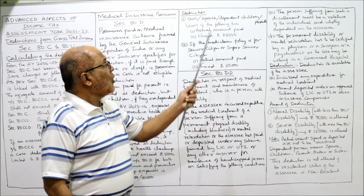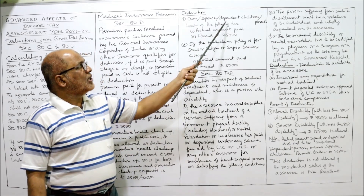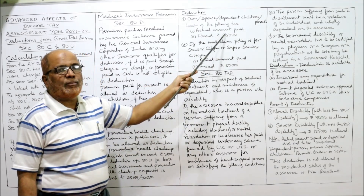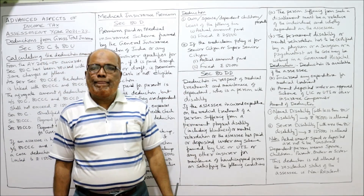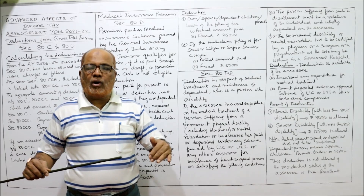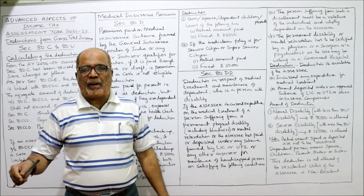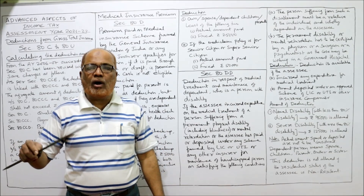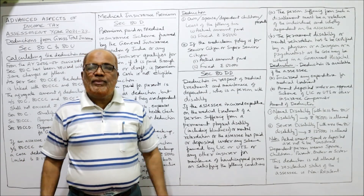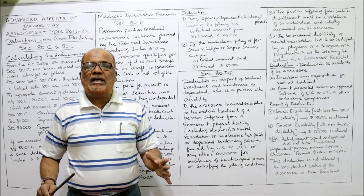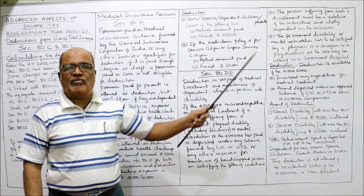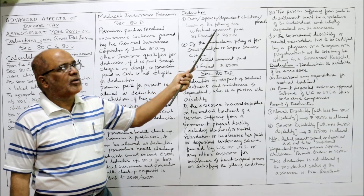Deduction for own, spouse, dependent children, or parents: the amount allowed is the least of the actual amount paid or Rs. 25,000. So medical insurance premium paid on the own life of the SSC, or spouse, dependent children, or parents — the total amount should not exceed Rs. 25,000. Actual amount paid or Rs. 25,000, whichever is less, will be allowed.